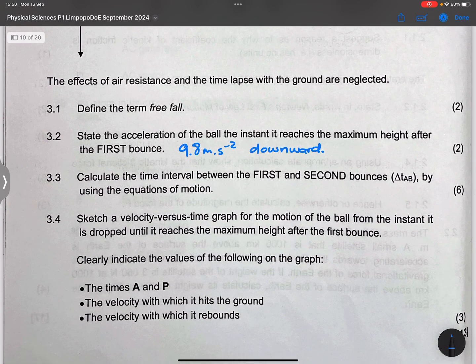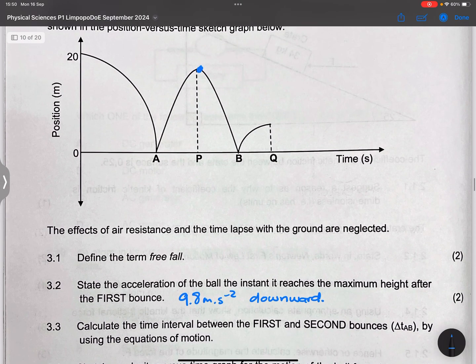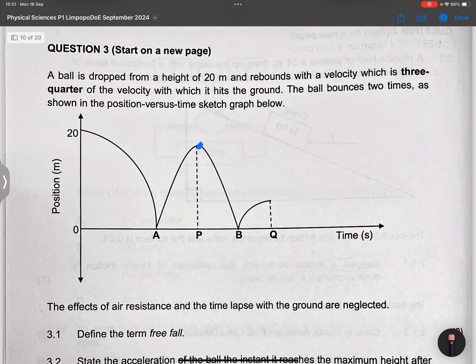Now the next question says calculate the time interval between the first and the second bounce, by using the equations of motion. We want to find out how long will it take to move from A up until B. But what we need to find out in this case is with what speed will it bounce back from A.